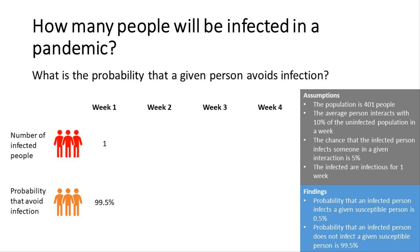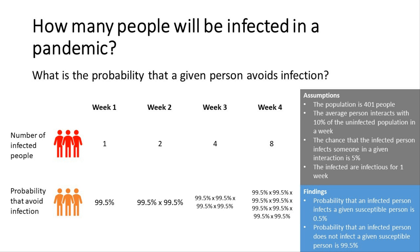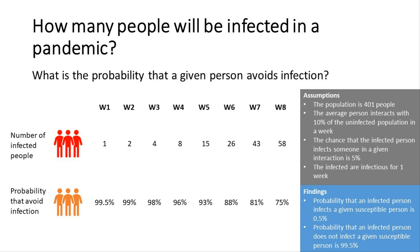The probability that a given person avoids infection varies with the number of infected people. With one infected person, the probability is 99.5%. With two infected people, it's 99.5% × 99.5%. The pattern continues: with four infected people it's 99.5% multiplied four times, and so on. As the number of infected people rises, the probability that any given person avoids infection goes down — you're more likely to catch a disease if more people have it. Here the probabilities are projected out to about week eight, and the probability of avoiding infection keeps falling.